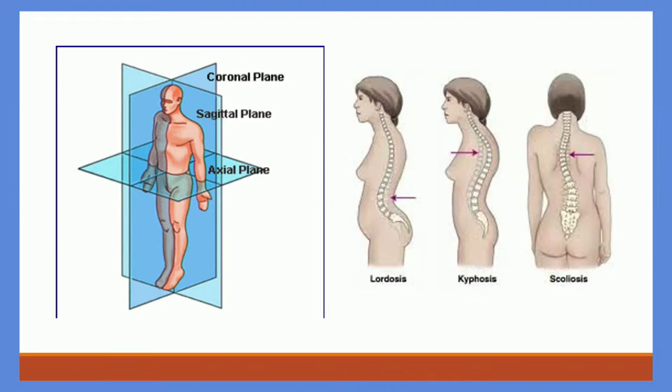I put these planes next to one another for reference. When we are discussing lordosis or kyphosis, we are looking at the picture in the sagittal plane. When we're looking at scoliosis, we are looking at the patient through the coronal plane.